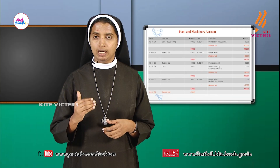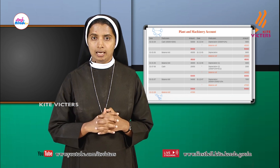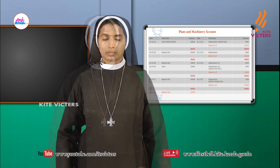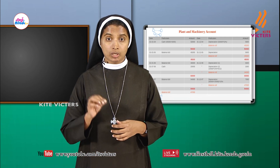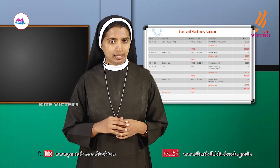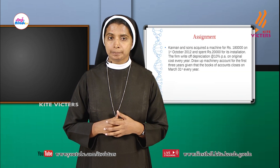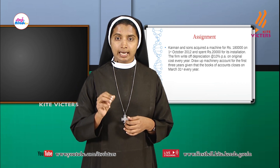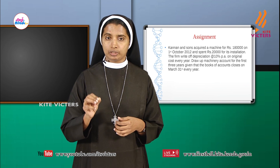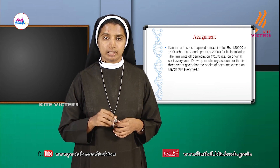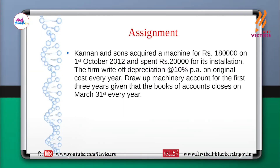The four years covered are 2004, 2005, 2006, and 2007. This completes the problem under the straight line method. For the assignment: Kandan and Sons acquired a machine for ₹1,80,000 on 1st October 2012 and spent ₹20,000 for its installation. The firm writes off depreciation at 10% per annum on original cost. Draw up the machinery account for the first 3 years, given that the books close on 31st March every year.